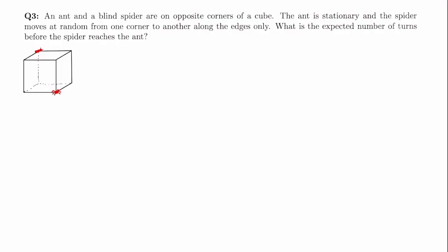Now we're ready to tackle the lazy spider problem. You can notice that the spider is currently three edges away from the ant — and in fact that's the furthest he ever is. If the spider were at a closer corner, he'd only be two edges away, and at another corner he'd be one edge away. So we can try to encode how far the spider is from the ant into our problem and apply the same trick.